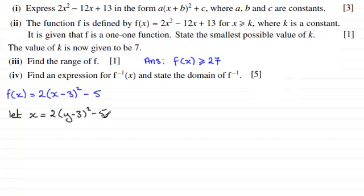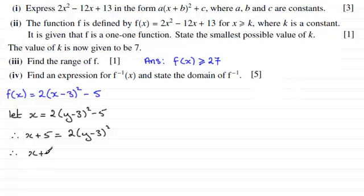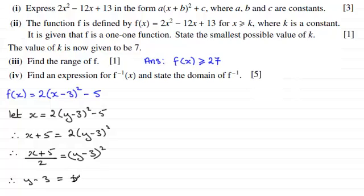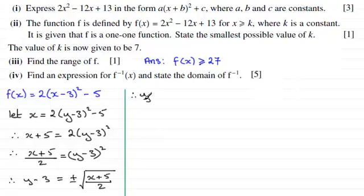We let x equal 2(y minus 3) squared minus 5, then rearrange to make y the subject. Adding 5 to both sides gives x plus 5 equals 2(y minus 3) squared. Dividing both sides by 2 gives (x plus 5) divided by 2 equals (y minus 3) squared. Taking the square root of both sides gives y minus 3 equals plus or minus the square root of (x plus 5) divided by 2. Adding 3 to both sides gives y equals 3 plus or minus the square root of (x plus 5) divided by 2.